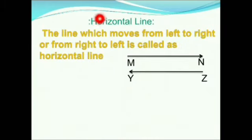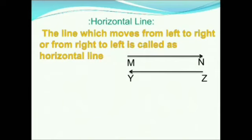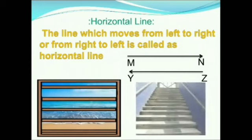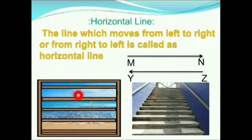Next, we will move to horizontal line. The line which moves from left to right or from right to left is called a horizontal line. You can see a picture of a window and stairs. Are there any horizontal lines in these pictures? Yes. You see stairs and windows every day — they all have horizontal lines. See the things in your house and find out which ones have horizontal lines.